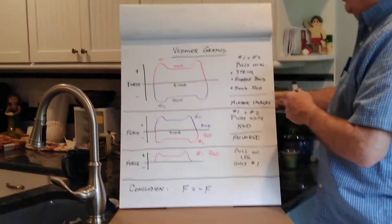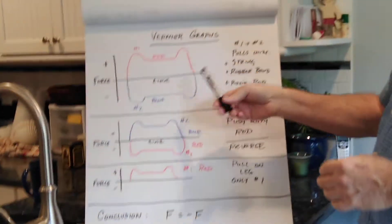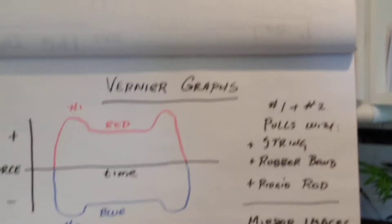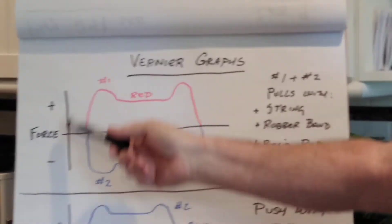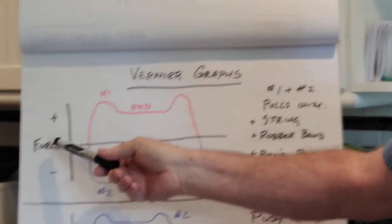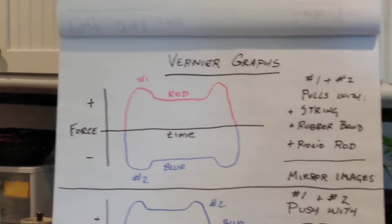Our data is pretty simple and straightforward. We generated Vernier graphs of force against time, where the upper portion of the graph is a positive force and the bottom portion is a negative force.